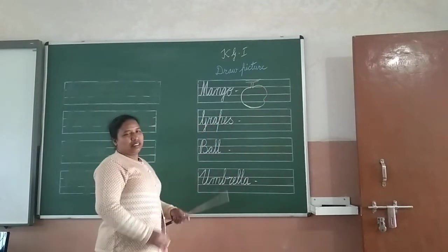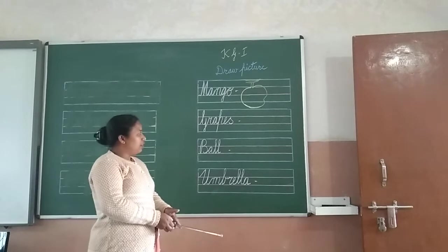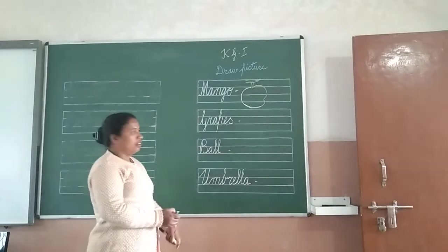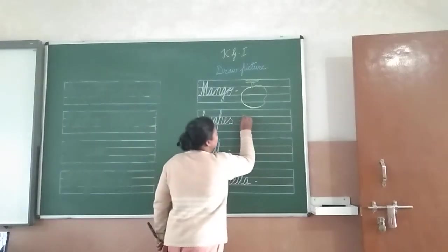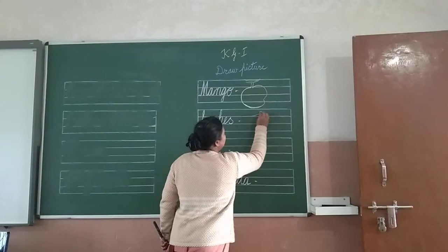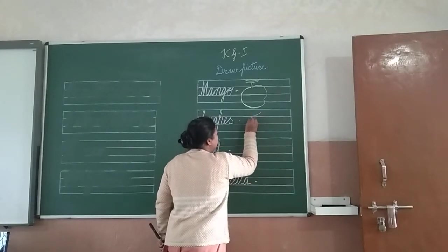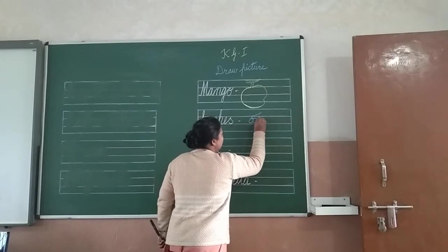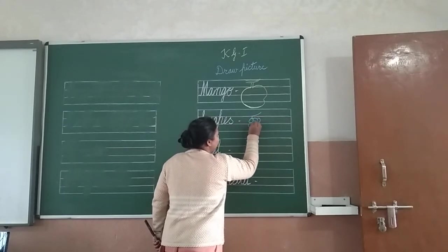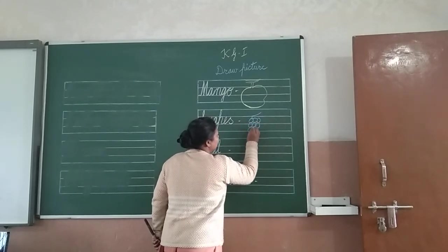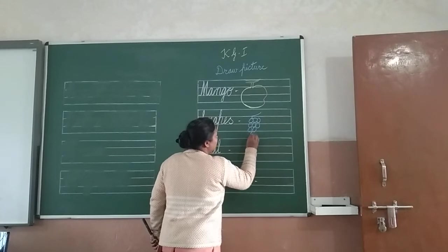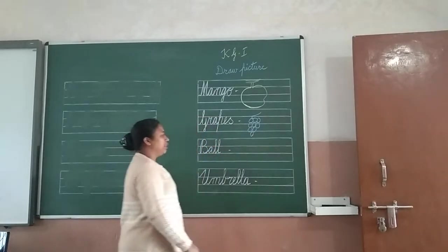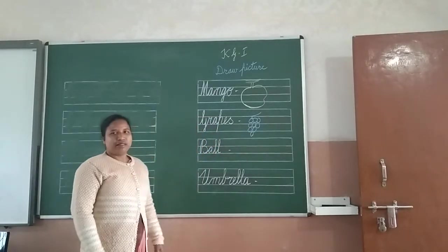Then grapes. Grapes. Okay? You have learned to draw grapes now. So here we will make one line, and then here we will make two lines. And then make like this — round, three. Then down here we will draw and go. Like this, like this, like this and like this. We will draw.